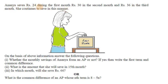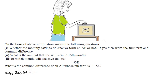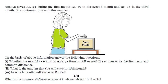Ananya saves Rs.24 during the first month, 30 in the second month, 36 in the third month, and she continues to save in this manner. Answer the following questions on the basis of this information.